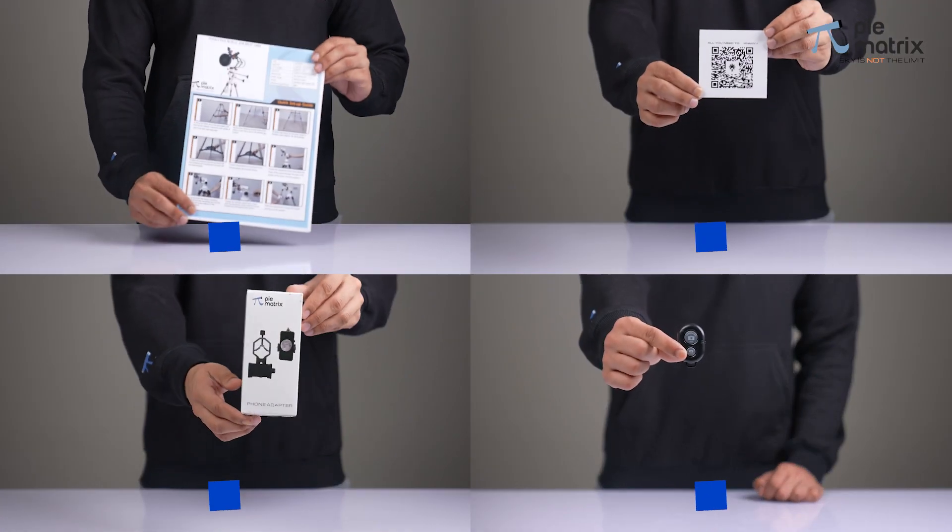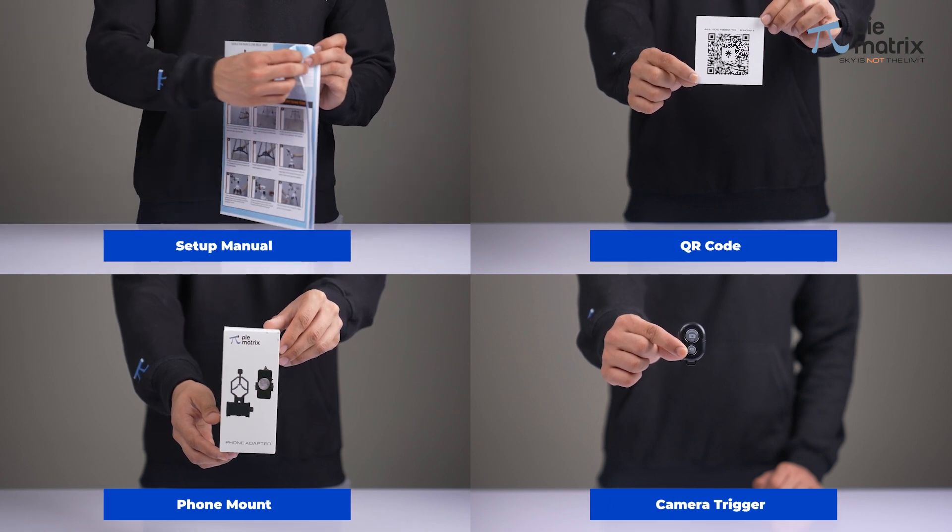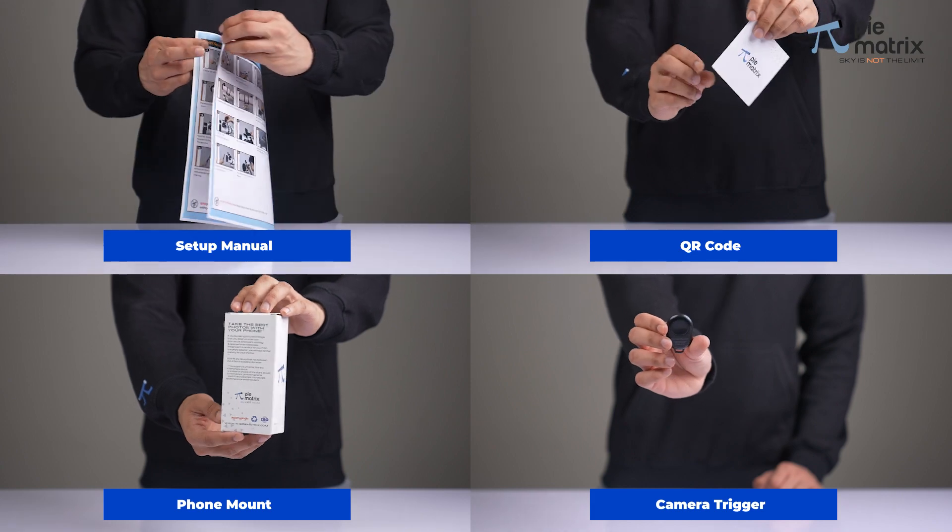We also get other necessary things like a setup manual, all-in-one QR code, phone adapter and a Bluetooth camera trigger.